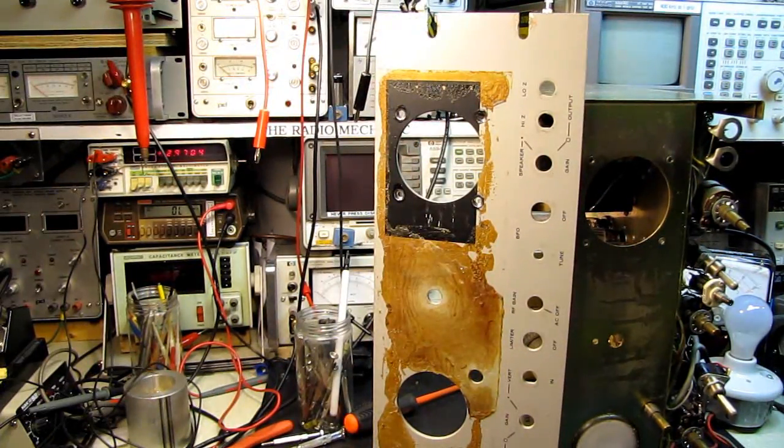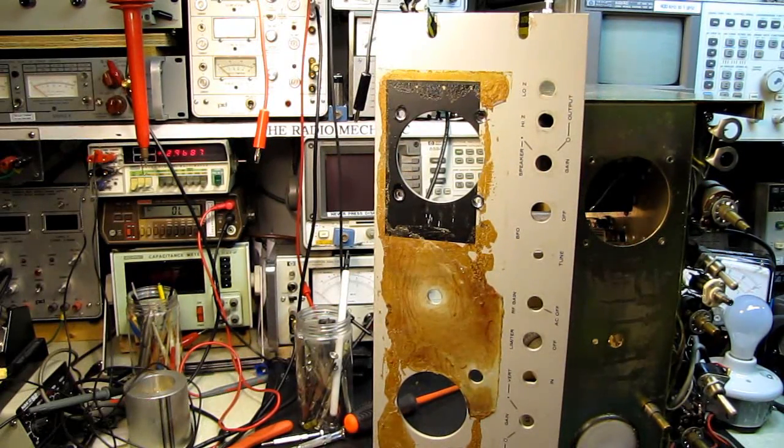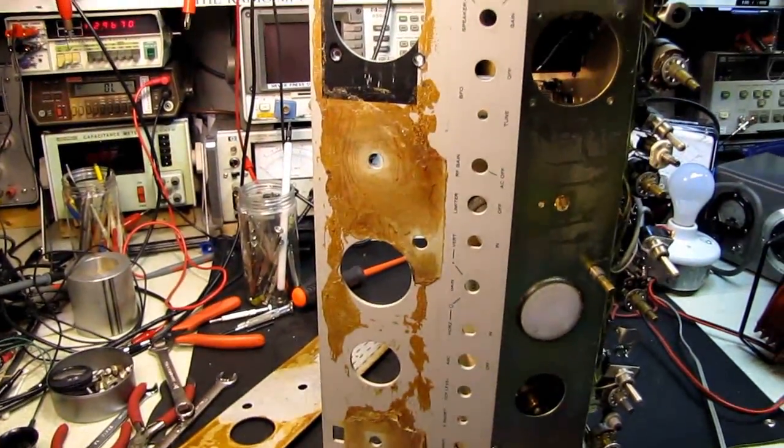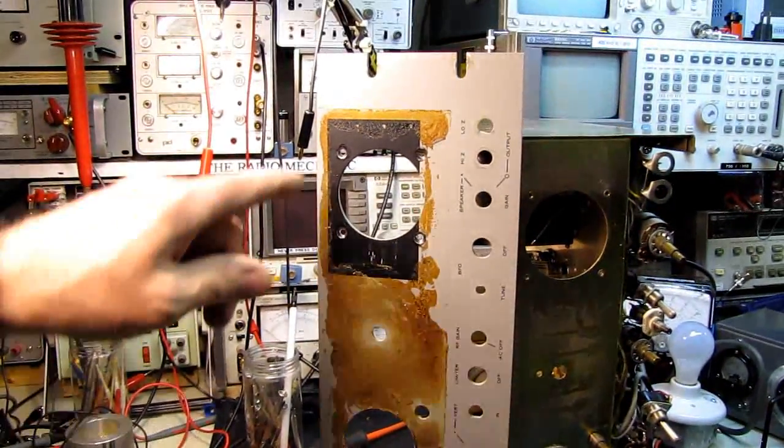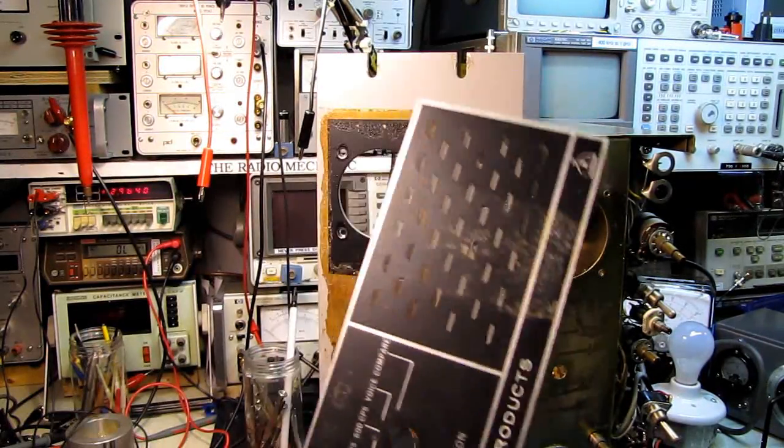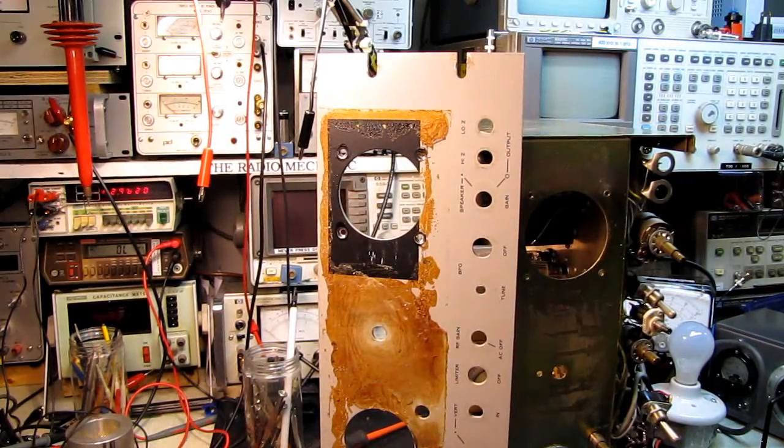We'll get it all cleaned up, put some fresh adhesive on there, put the panel back together, and put it back on the unit. That's all. Just wanted to show you, anybody working on one of these, how to get the thing apart if you have to. Because of the four screws back here, this front panel has to be removed. That's it for today. I'm the radio mechanic. See you soon.